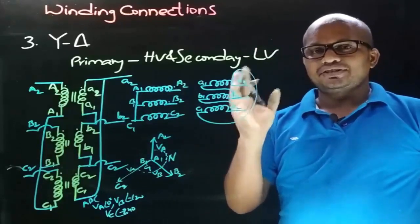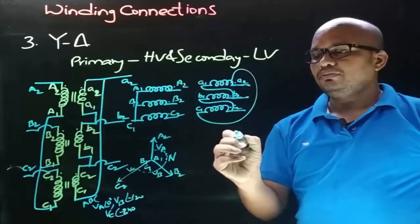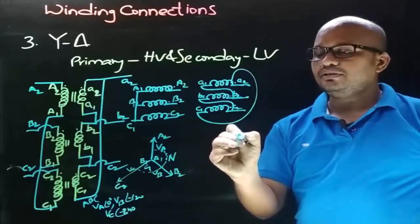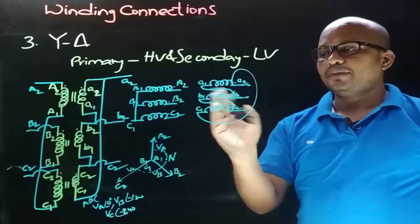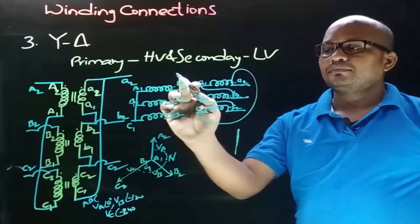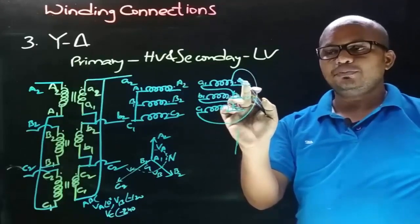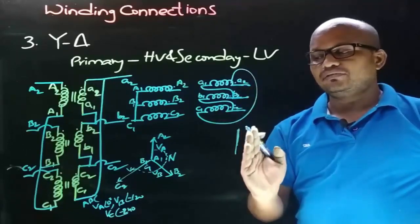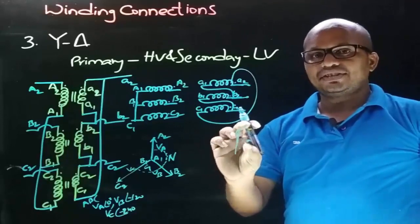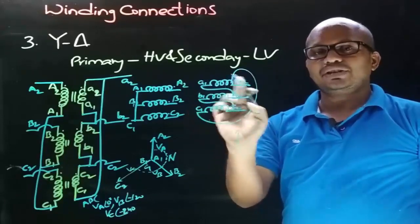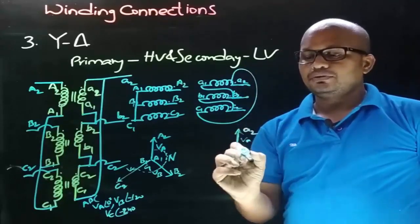Now let's obtain the phasor diagram for secondary winding connections. Secondary side phasors are drawn parallel to primary side phasors. Let's draw the secondary side VA phasor. On the primary side the connection is taken from the dot end, and on the secondary side the connection is also taken from the dot end, so the direction of the secondary side phasor will be the same as the primary side. The terminals of VA are a1 and a2; as the connection is taken from dot end a2, the arrow points towards a2 and the other end is a1.